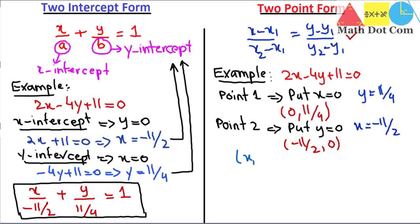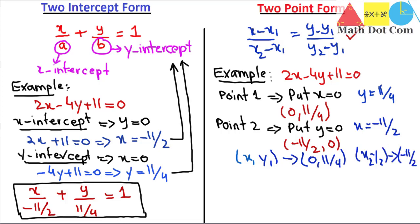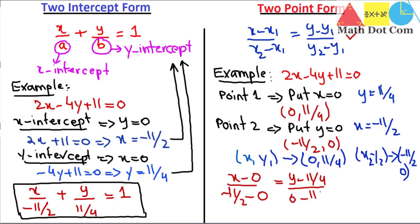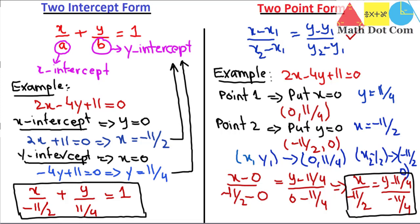So x1, y1 is (0, 11/4) and x2, y2 is (minus 11/2, 0). Substituting into the two-point form: x minus 0 divided by minus 11/2 minus 0 equals y minus 11/4 divided by 0 minus 11/4. This gives x divided by minus 11/2 equals y minus 11/4 divided by minus 11/4. This is the required equation in two-point form — this is how you solve any given equation to get the linear equation in two-intercept or two-point form.